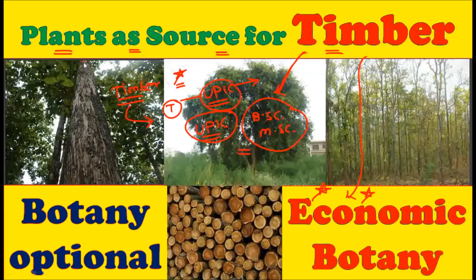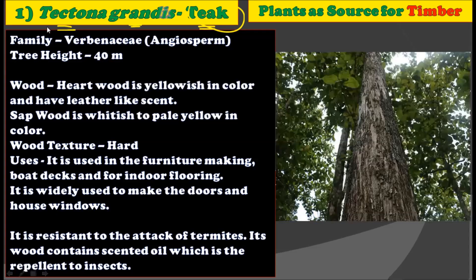So the very first plant we are going to see is Tectona grandis, commonly known as Teak. Tectona grandis is famous for the production of timber, belonging to the family Verbenaceae, and it is an angiosperm. In this picture, you can observe the Tectona grandis plant showing the stem from which the main timber is extracted.